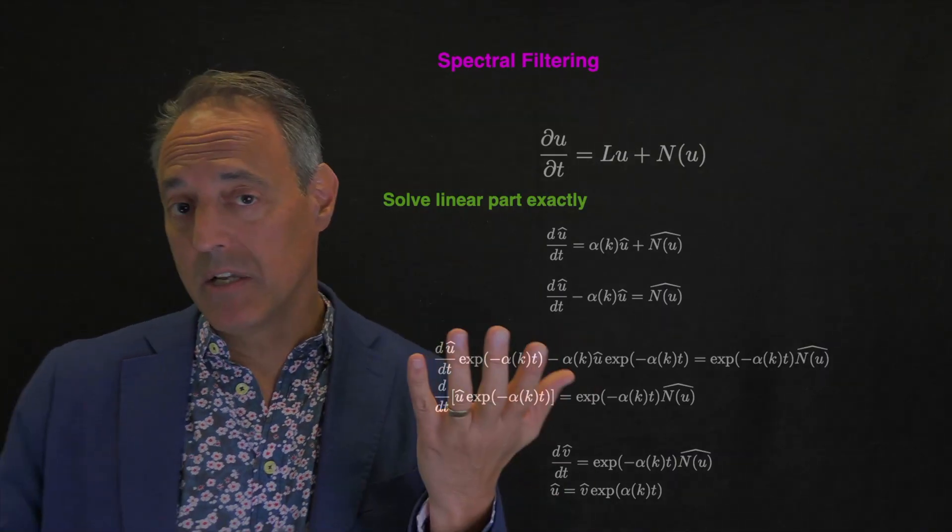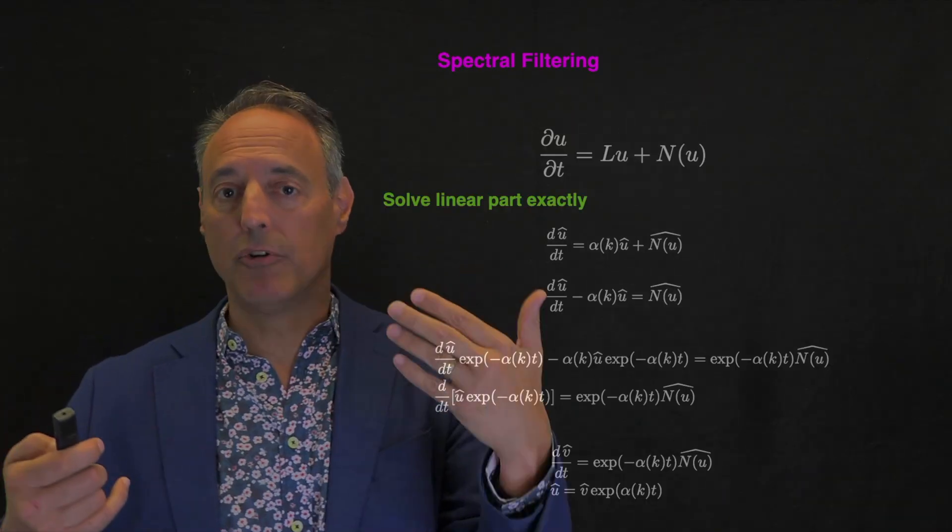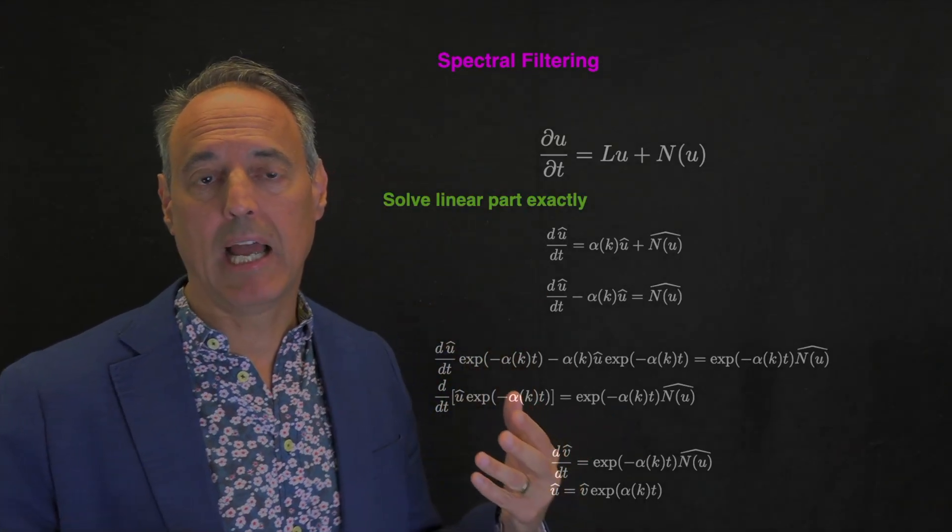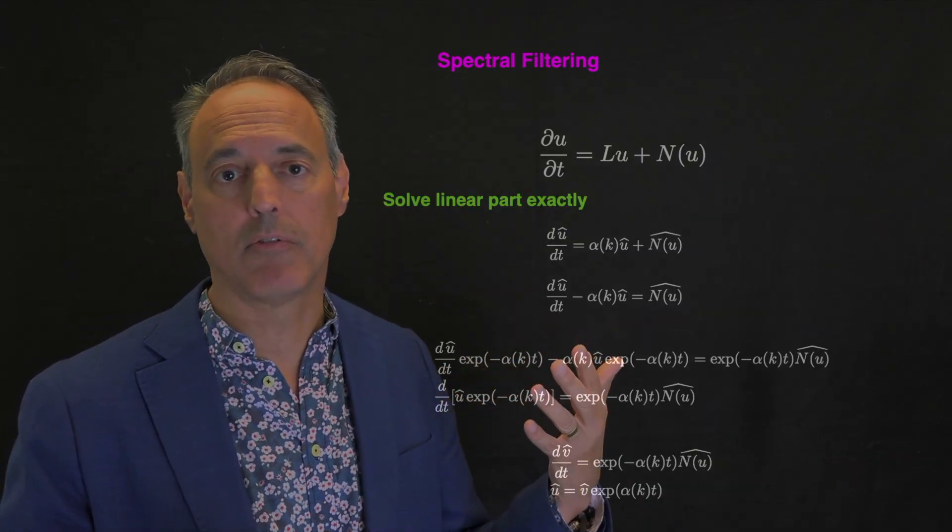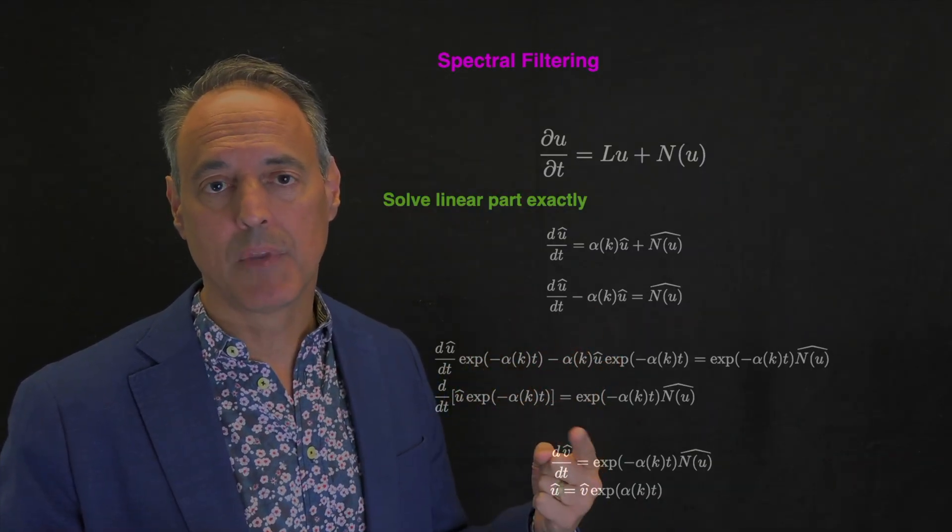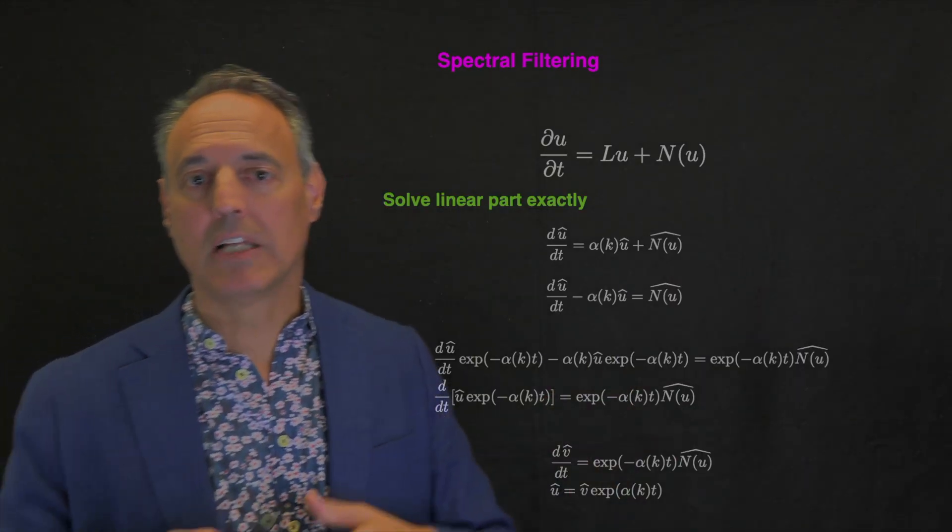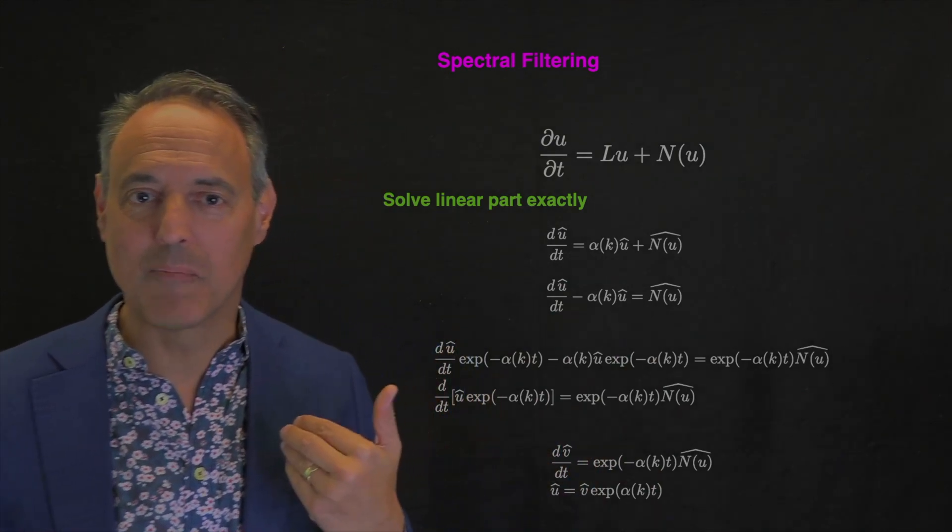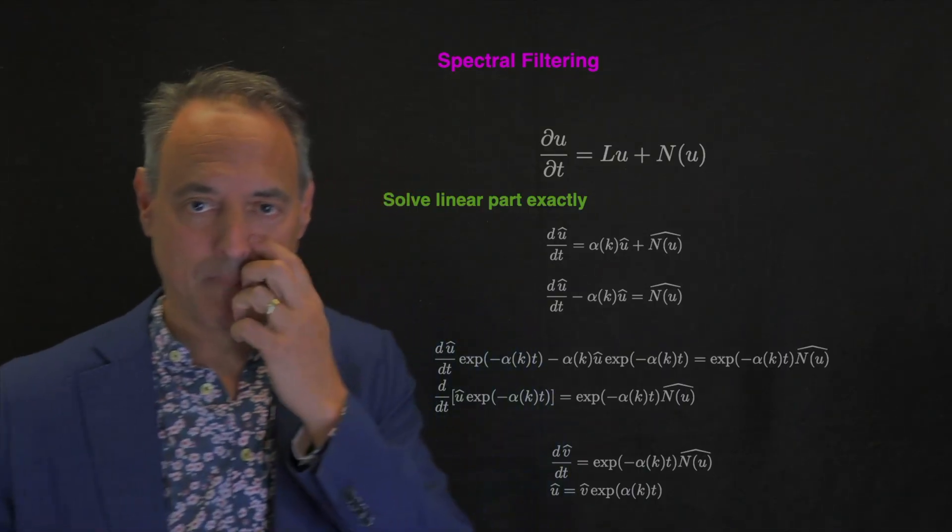This filtering technique is really powerful because what it allows you to do is take much larger steps in the solution technique and gets around the numerical stiffness issues. For my PhD thesis, I was working on a problem that had a fourth order diffusion term with a bunch of nonlinearities. And without this scheme, I had to take time steps of Δt that were 10 to the minus 6 to resolve it. But once I did this, I could take time steps of 10 to minus 3. That's three orders of magnitude faster. And when I was in grad school, we had really slow computers. So this saved the day for me in my thesis.